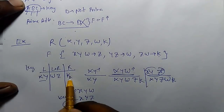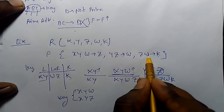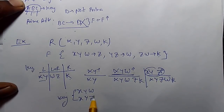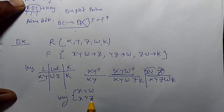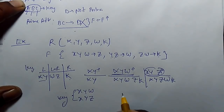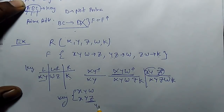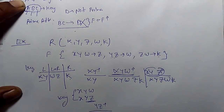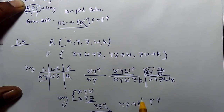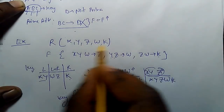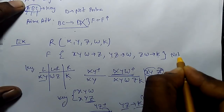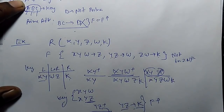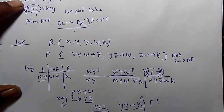Now, subsets of these keys should not determine non-prime attributes. K is a non-prime attribute. ZW separately is not a key, but YZ is a subset of candidate key XYZ. Computing the closure of YZ: we find W, and ZW determines K, so YZ can determine K in F-plus. This means a proper subset of the key determines a non-prime attribute, so this functional dependency is not in 2NF. If even one rule fails, the complete relation is not in 2NF.